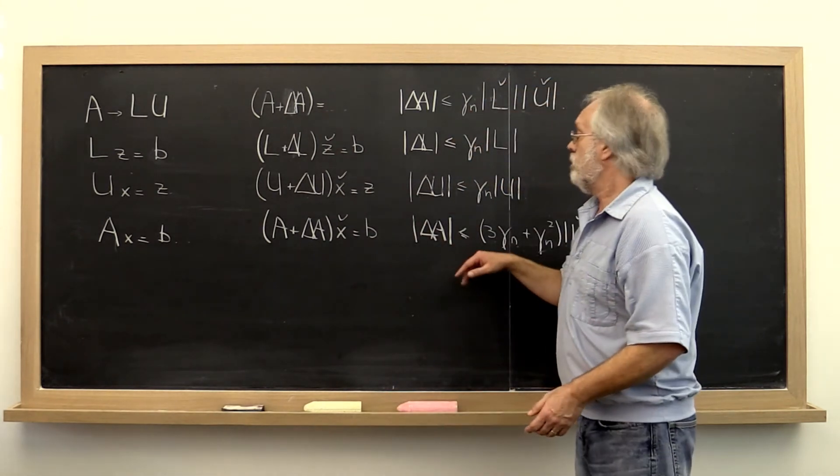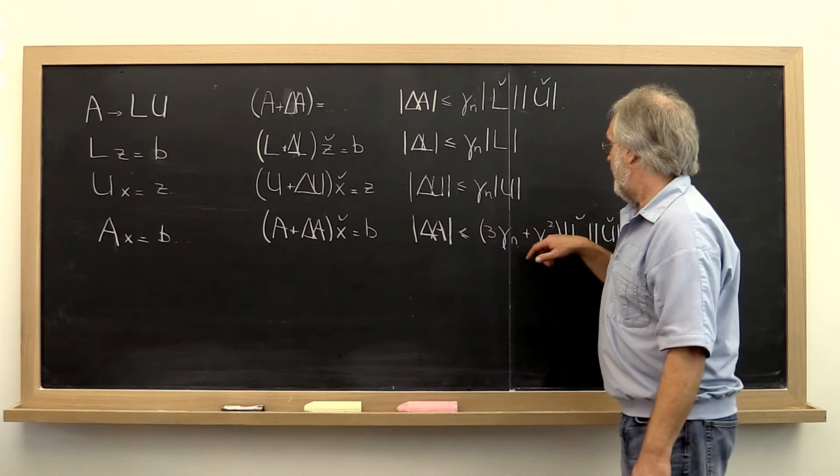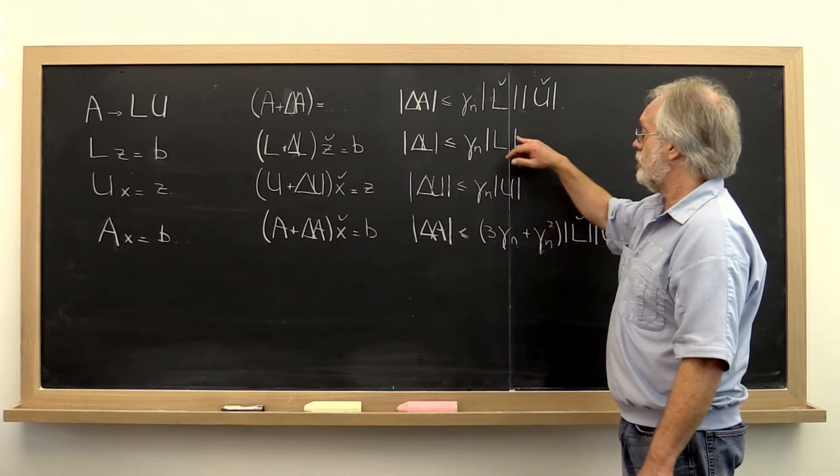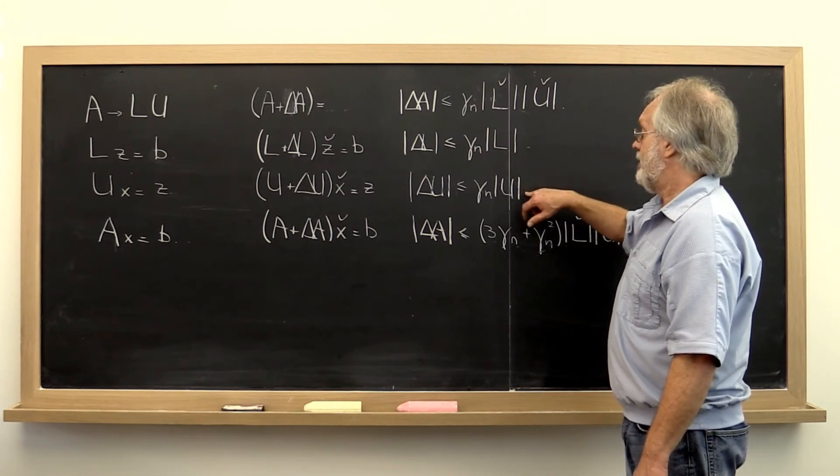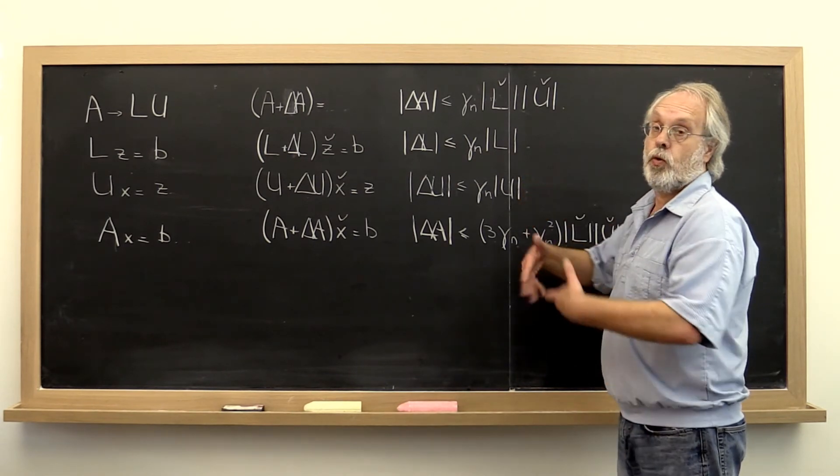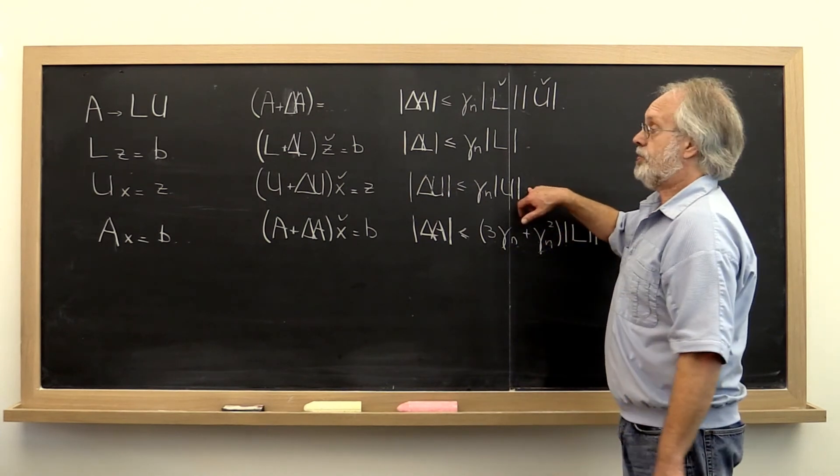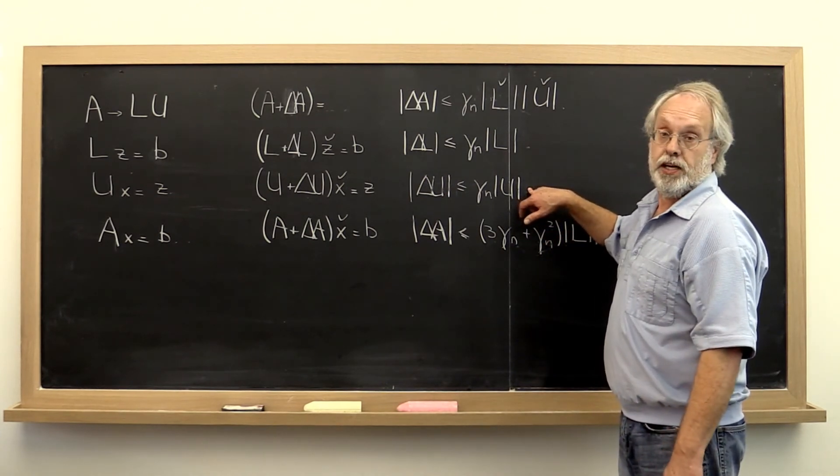And that probably would give you an order gamma n squared term after you do the triangular solve. And then an order n squared term plus an order n cubed term after you do the solve with matrix U check.